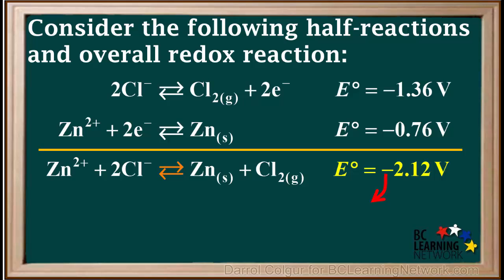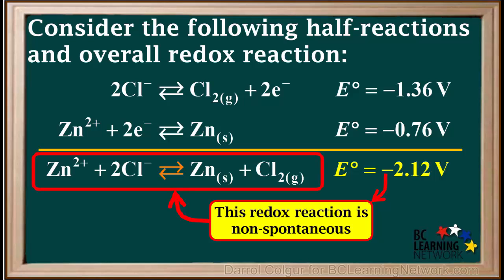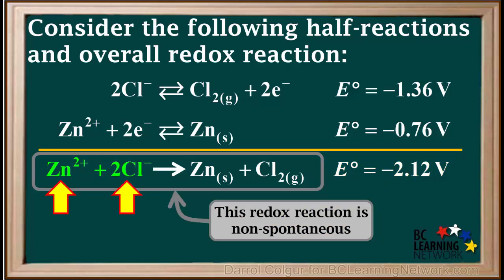A negative E0 value for the overall redox reaction means that this redox reaction is a non-spontaneous reaction as written. So that means if we simply mixed Zn2+ and Cl-, we would not get solid zinc and chlorine gas.